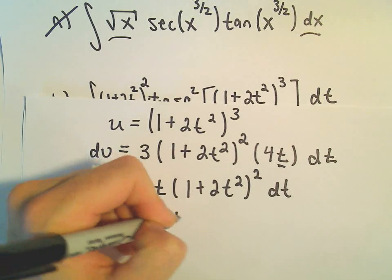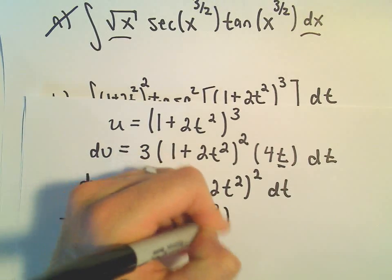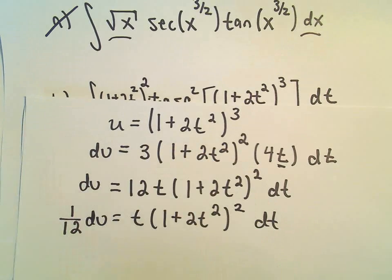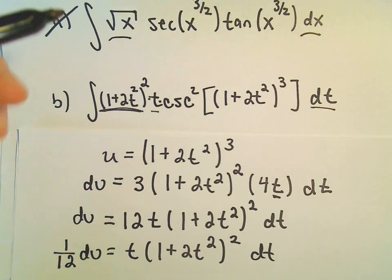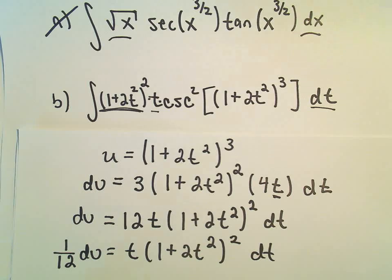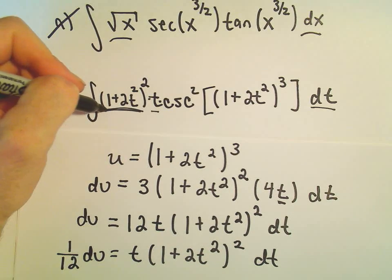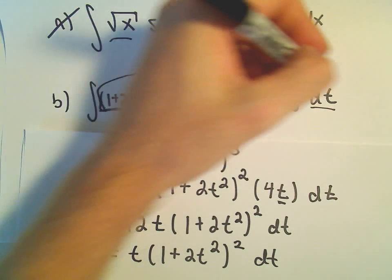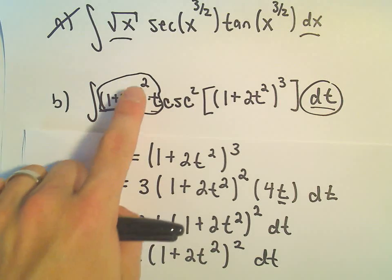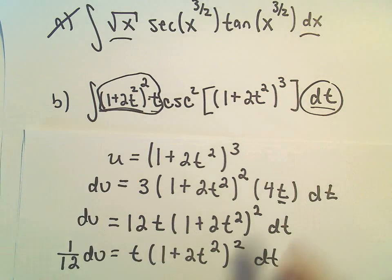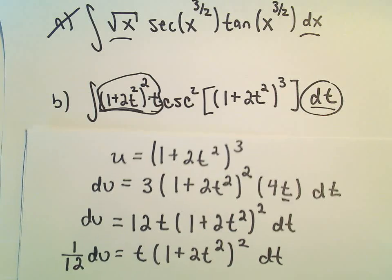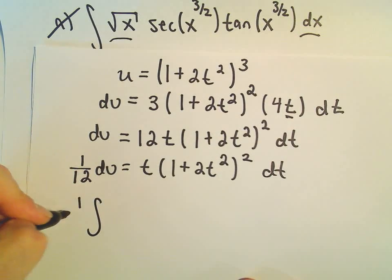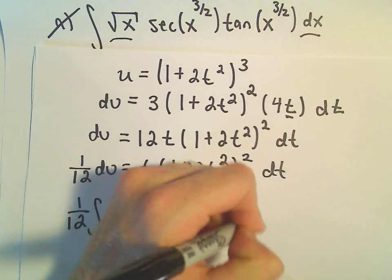And then we'll have t times (1 + 2t²)² dt, and that's going to take care of just about everything that we need. It'll take care of this part and this part, so (1 + 2t²) times t times dt. That's what we have here. So I'm going to replace all of that with our 1/12 times du.